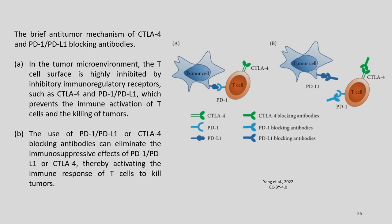The brief anti-tumor mechanism of CTLA-4 and PD-1/PD-L1 blocking antibodies: in figure A, you can see the tumor microenvironment where the T cell surface is highly inhibited by inhibitory immunoregulatory receptors such as CTLA-4 and PD-1/PD-L1, which prevents the immune activation of T cells and the killing of tumors. In figure B, you can see that the use of PD-1/PD-L1 or CTLA-4 blocking antibodies can eliminate the immunosuppressive effect of PD-1/PD-L1 or CTLA-4, thereby activating the immune response of T cells to kill the tumors.